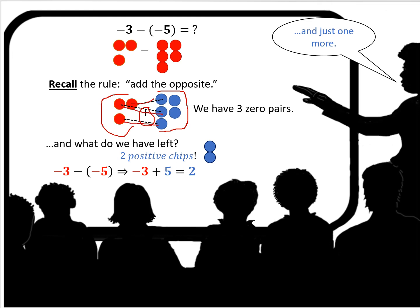That one to that one, that one to that one. So those are gone. What do I have left? Two positive chips. Negative 3 minus negative 5 is the same as negative 3 plus a positive 5 and the sum is 2. Two positive chips. It's really that easy.